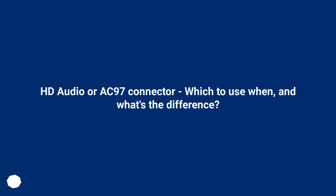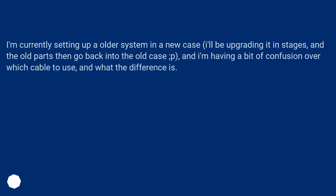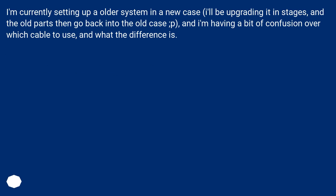HD audio or AC-97 connector — which to use when, and what's the difference? I'm currently setting up an older system in a new case. I'll be upgrading it in stages, and the old parts then go back into the old case. I'm having a bit of confusion over which cable to use and what the difference is.